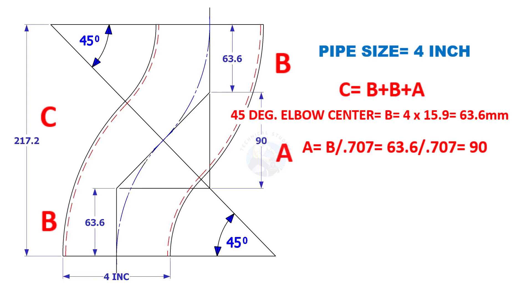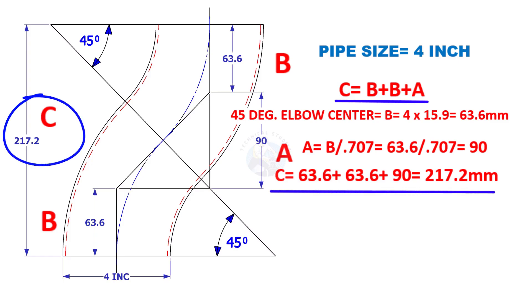The distance of A is B divided by point seven zero seven, which is ninety millimeters. Now B plus B plus A is two hundred and seventeen point two millimeters.